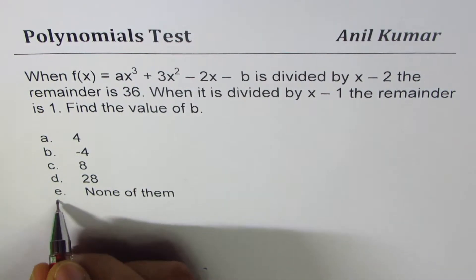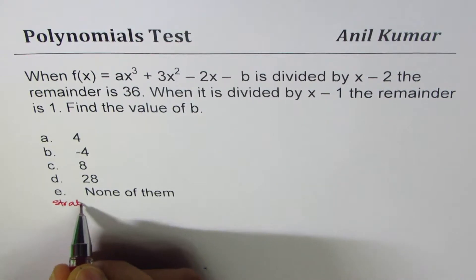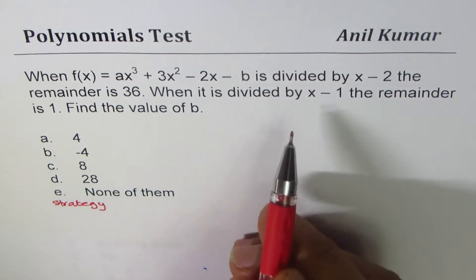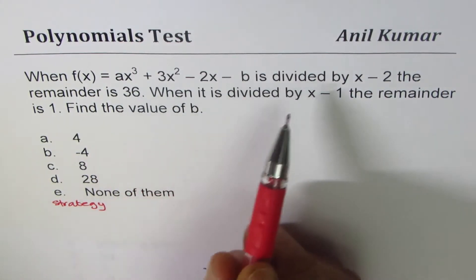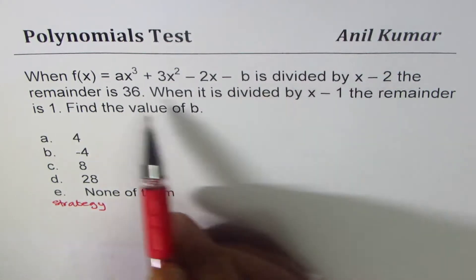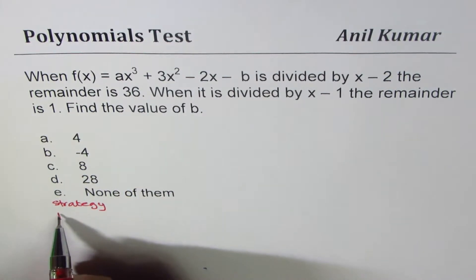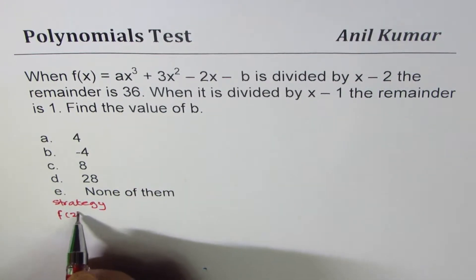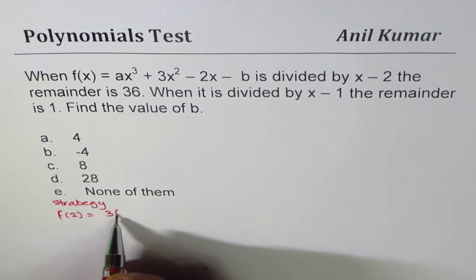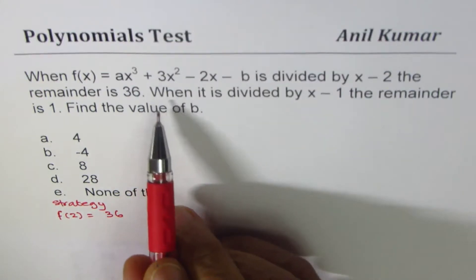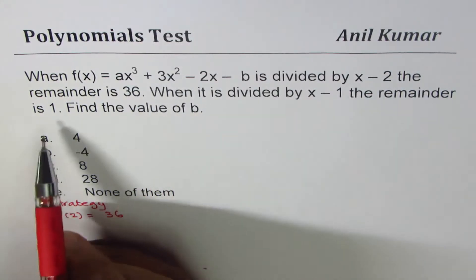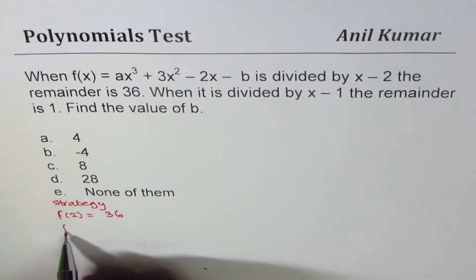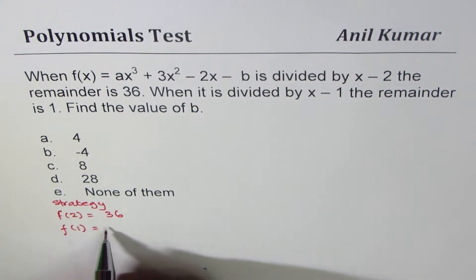Now the strategy here is, since we know the remainder when we divide by x - 2 is 36, it means that the value of the function at 2 is 36. And also when you divide by x - 1, the remainder is 1, which means that f(1) = 1. So that is the basis for solving this question.